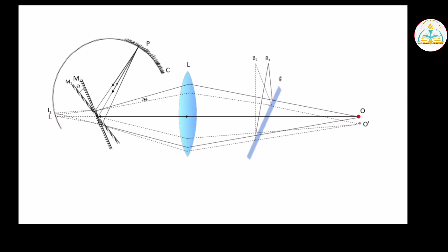So, we will complete the process of the figure and do the labeling. Suppose this point is A and this point is C. This distance is the radius of curvature. This distance is B and C. The shift of image is Y. These distances are equal.